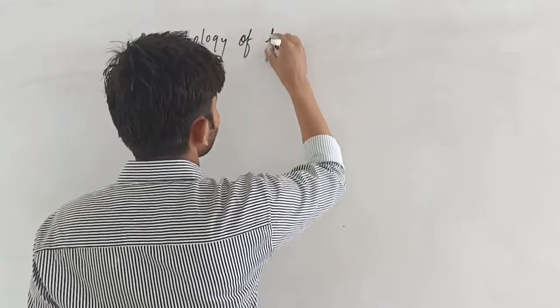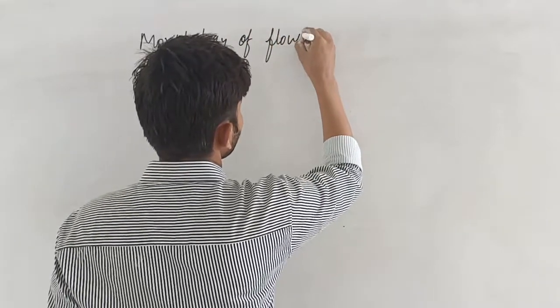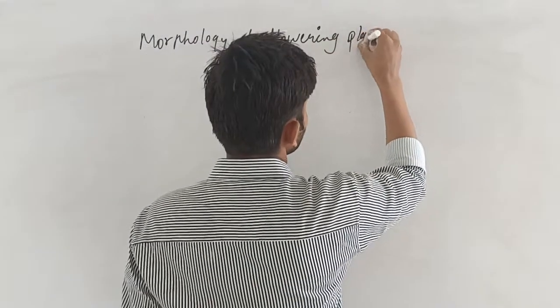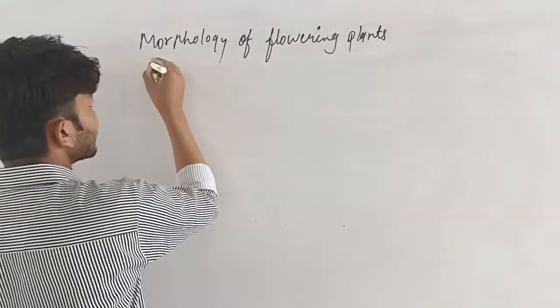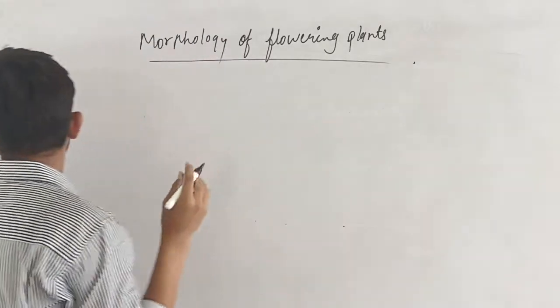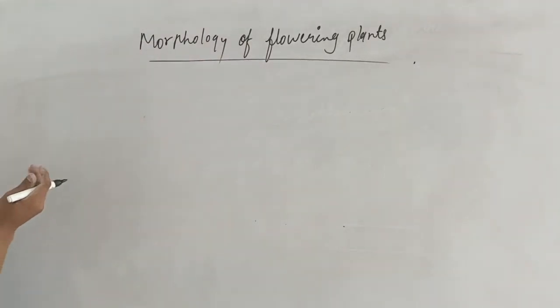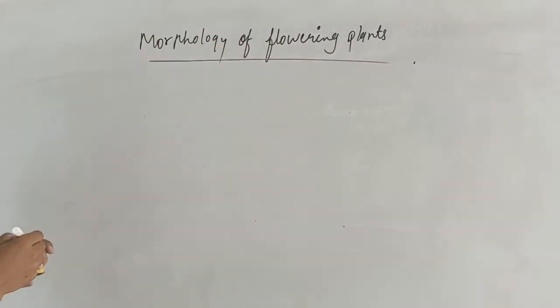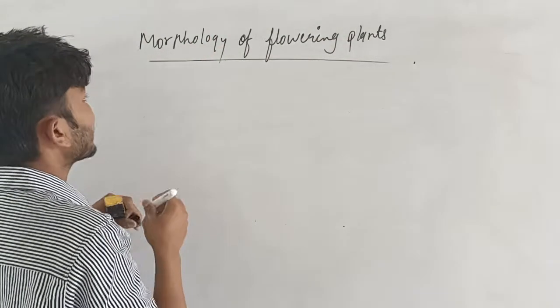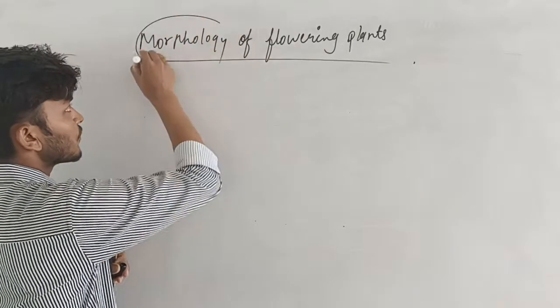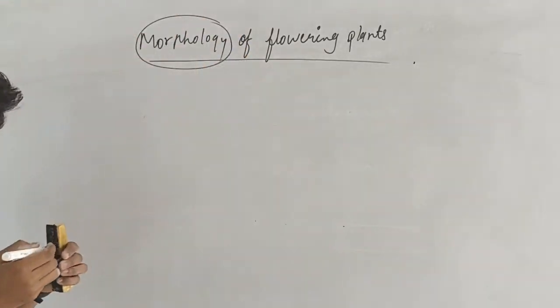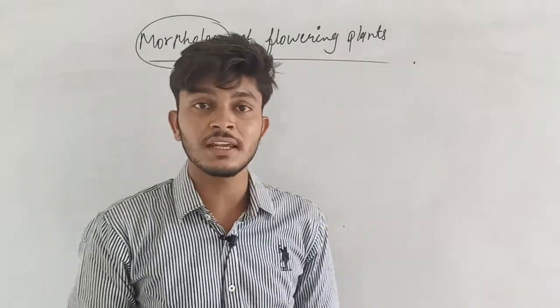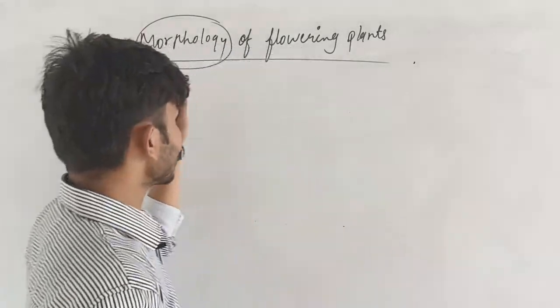Morphology of flowering plants. First of all we need to look toward the name of the chapter. We need to talk about morphology. What is morphology? What is the external appearance of an organism?